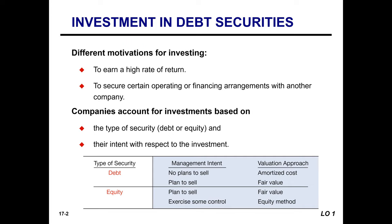We might also have some ulterior motives, like to secure operating or financing arrangements with another company — for example, if we want to invest in one of our suppliers or vendors. So there are different motivations for investing. Companies account for investments based on the type of security, whether it's debt or equity, and then their intent with respect to the investment. In this first recorded lecture, we're going to focus on debt securities.